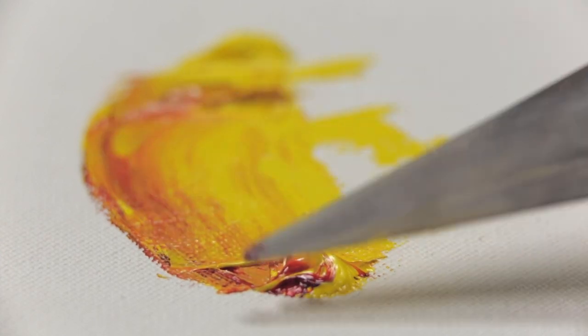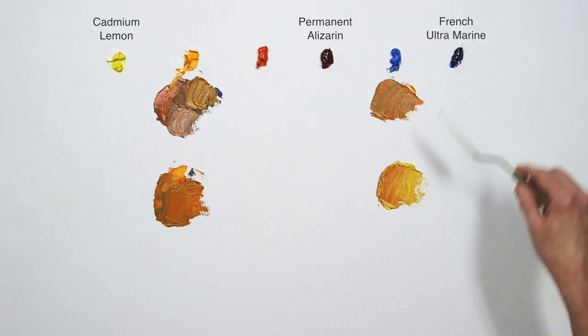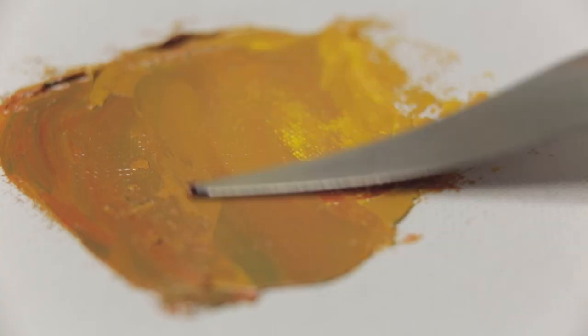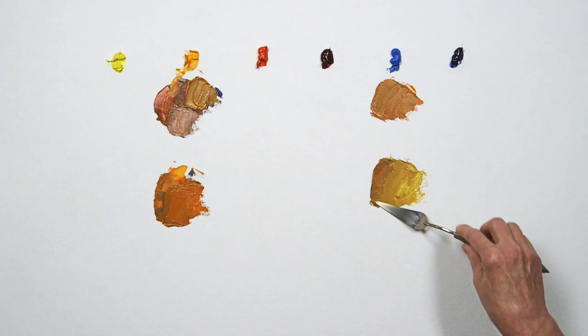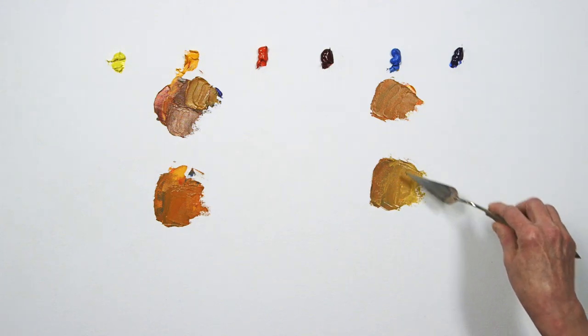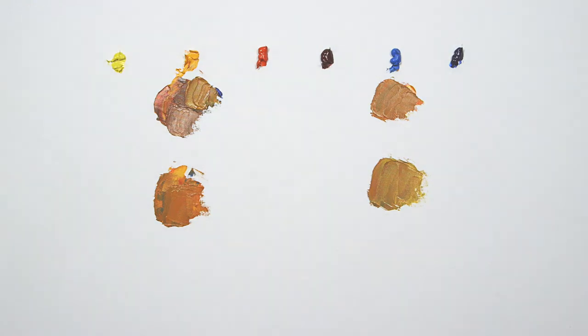You can make rich browns by using many different primaries, not just the ones I've shown. As long as at least one of your primaries is opaque, the results will be beautiful and complex. I'll see you next time. Bye.